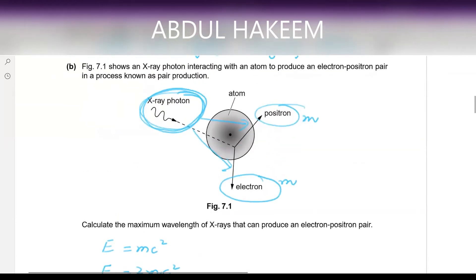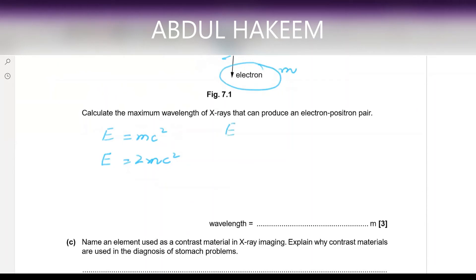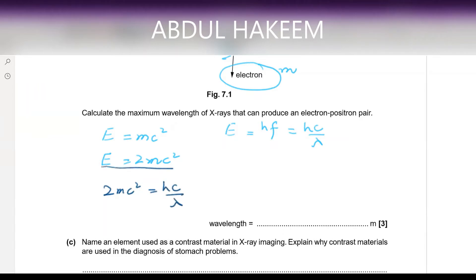The energy of the X-ray photon is equal to hf, and since we need to calculate wavelength, we write it as hc/λ. By conservation of energy: 2mc² = hc/λ. The whole energy of the wave is converted into the particles.